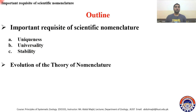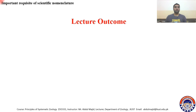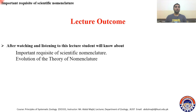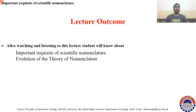The second topic will be the evolution of the theory of nomenclature. By listening and watching this lecture, students will know about the important requisites of scientific nomenclature and how the theory of nomenclature evolved through time.